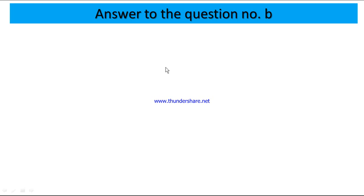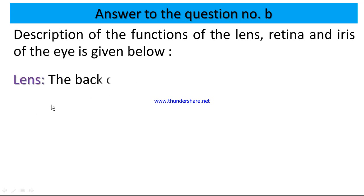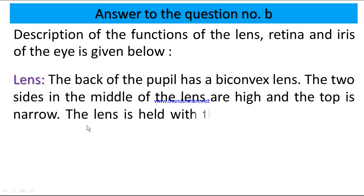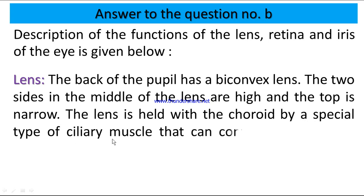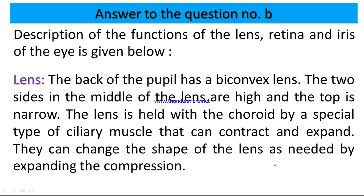Answer to question number B: description of the functions of the lens, retina, and iris of the eye is given below. Lens: the back of the pupil has a biconvex lens. The two sides of the middle of the lens are high and the top is narrow. The lens is held with the choroid by a special type of ciliary muscle that can contract and expand, allowing it to change the shape of the lens as needed.